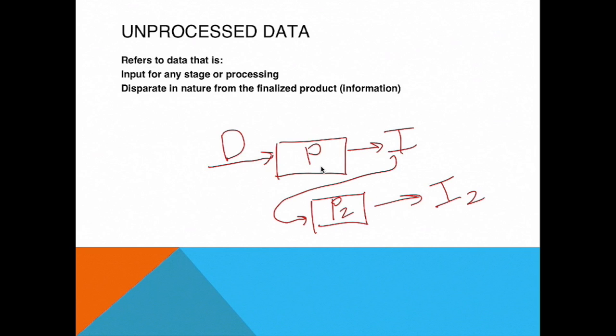Unprocessed data is always a relative concept. D is unprocessed data for I. I is unprocessed data for I2. So let's keep that in mind. Any data that will be processed can be considered unprocessed or raw data for whatever process is going to turn it into its final output.